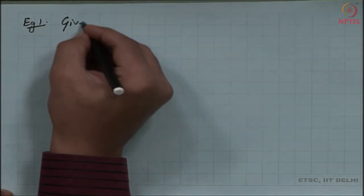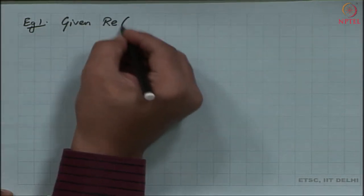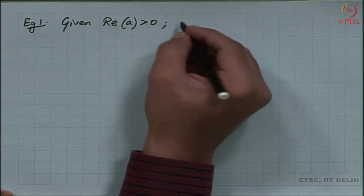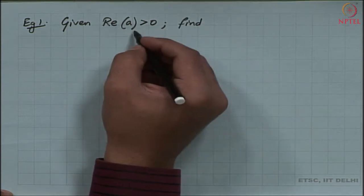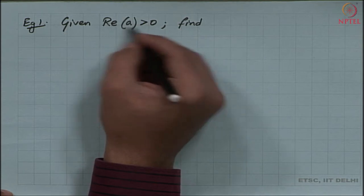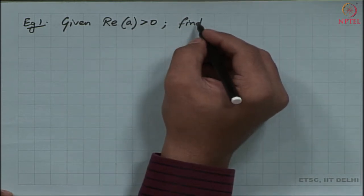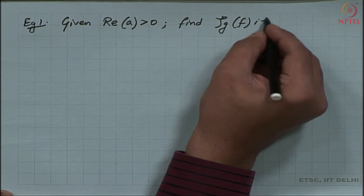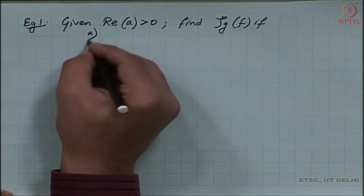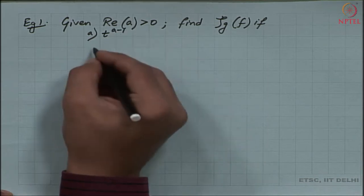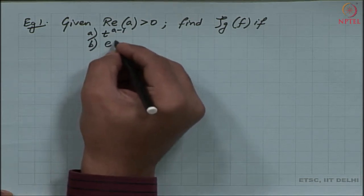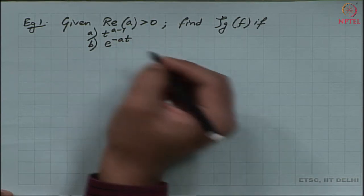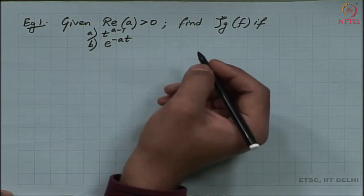I am given that the real value of a number is positive. I need to find the generalized Stieltjes transform of f, where f is t to the power a minus 1, and the second function is e to the power minus at. These are the two expressions I am going to find the Stieltjes transform for.